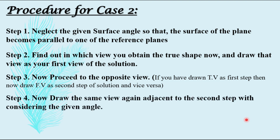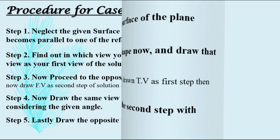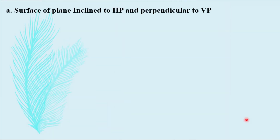Step four: draw the same view again adjacent to the second step, now considering the angle. Step five: lastly, draw the opposite view. Let us take an example for better understanding.